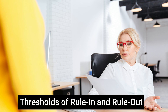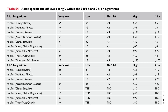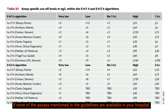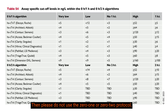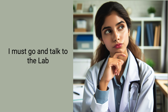Do we have thresholds for all commercially available troponin assays? No, we do not have thresholds for the 0-1 algorithm for all assays. These thresholds are assay specific — you cannot apply the values from one kit to another. You need to talk to your clinical pathologist and laboratory about which assay they have and whether it has been validated for the 0-1 algorithm. If none of the assays mentioned in the guidelines are available in your hospital, please do not use the 0-1 or 0-2 protocol.